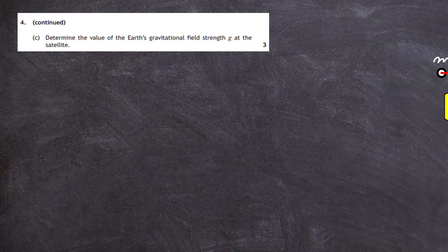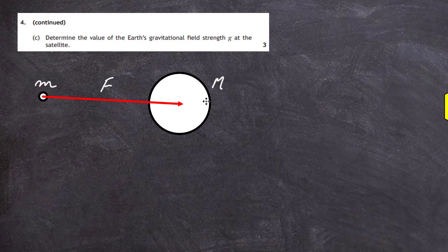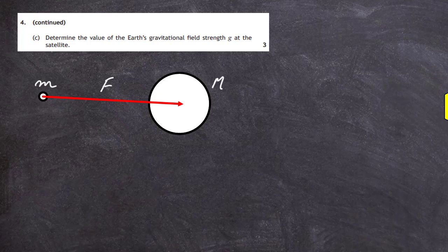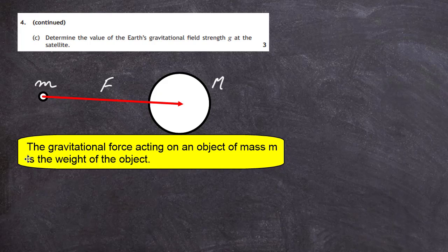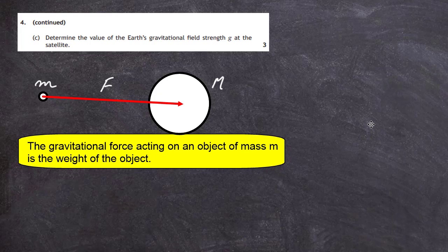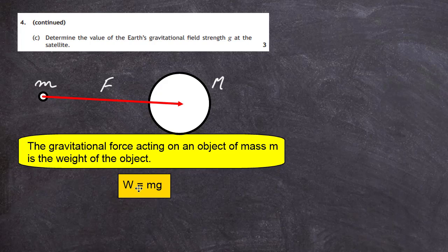Question 4, part C: determine the value of the Earth's gravitational field strength g at the satellite. The satellite experiences a gravitational force of attraction towards the Earth, which equals its weight — because the weight of any object is the gravitational force of attraction acting on it. The gravitational force acting on an object of mass m is the weight of the object.